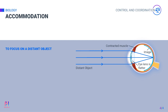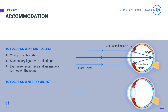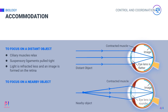Whenever you want to see an object that is far from your eyes, the ciliary muscles relax. This pulls the suspensory ligaments that connect the ciliary muscles with the lens. Pulling makes the eye lens thinner and less refraction occurs, which helps to focus light on the retina allowing for distant vision.